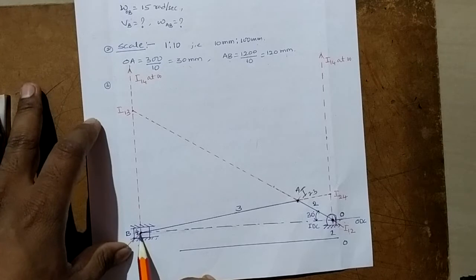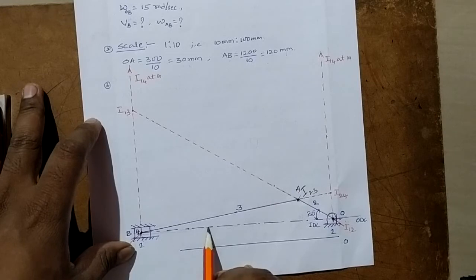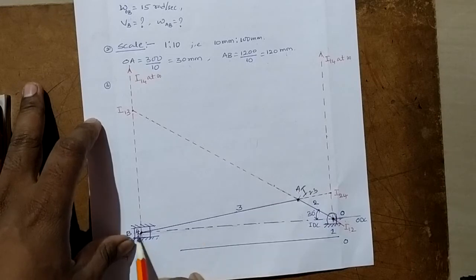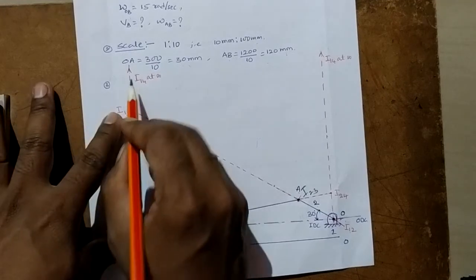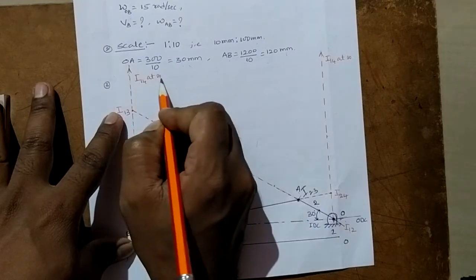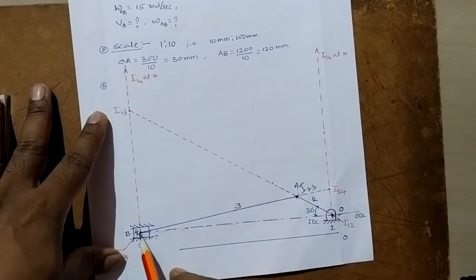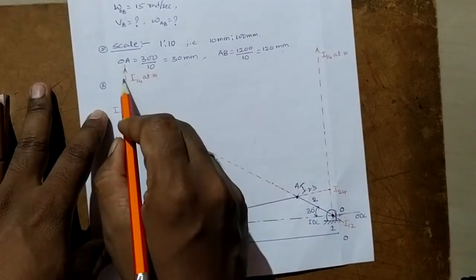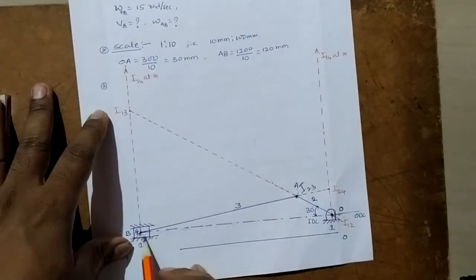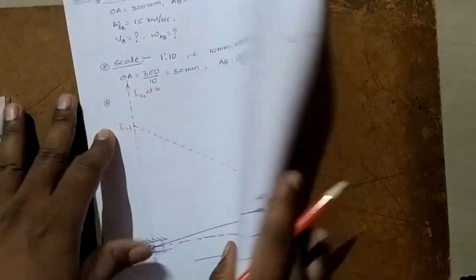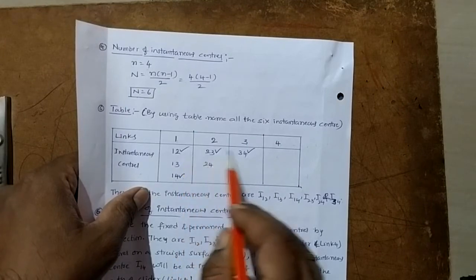Since it is sliding horizontally, we get the instantaneous center perpendicular to the motion of the slider at infinity. So I12, I23, I34, and I14 are all on this perpendicular line — I14 is at infinity perpendicular to the slider's motion. These four — I12, I23, I34, and I14 — are the fixed and permanent instantaneous centers. The remaining two are I13 and I24, which are neither fixed nor permanent.